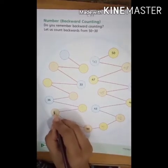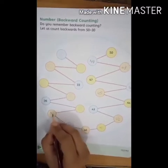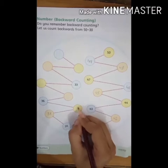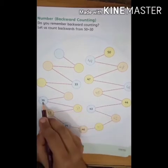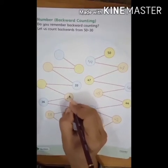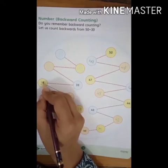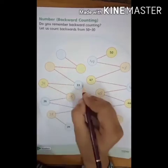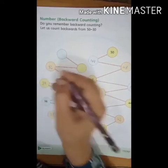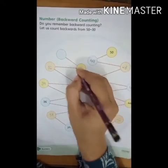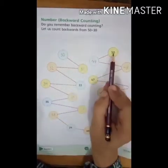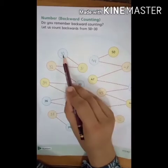45 se pahle 44 and 43. 43 se pahle 42. We have to write 42. Then 41, 40, 39. Before 39, the number is 38. Before 38 comes 37, 36, 35. Then 34, 33, 32, 31, and in the last, 30. We have to count backwards from 50 to 30.